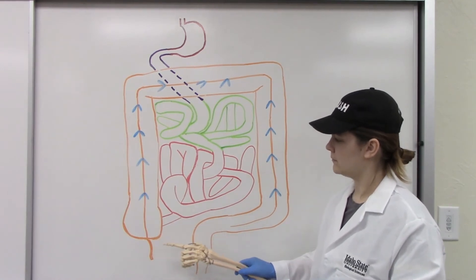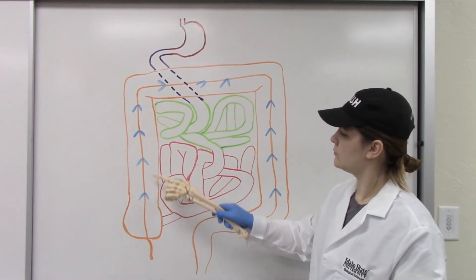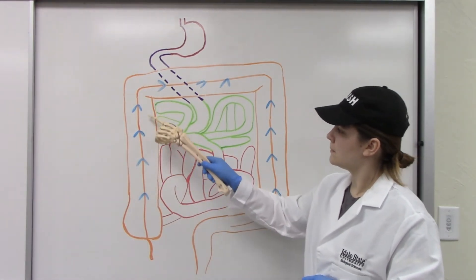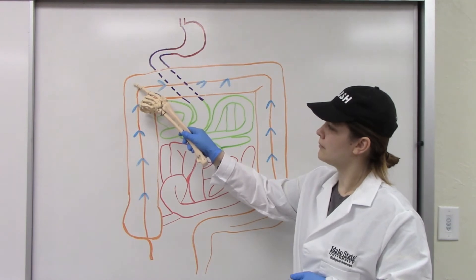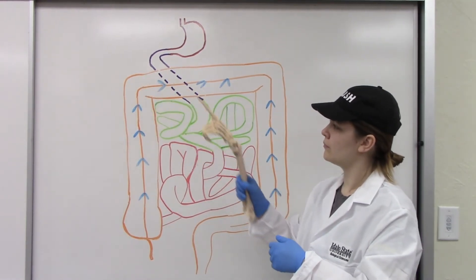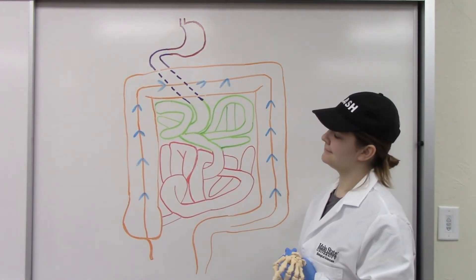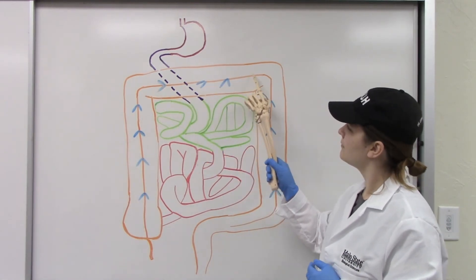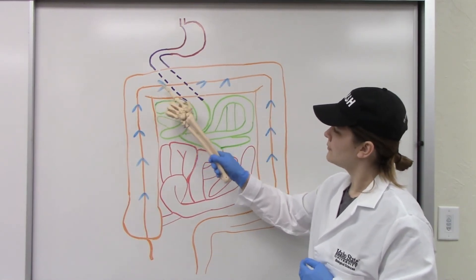The second portion of the box that travels from inferior to superior is the ascending colon. This corner of the box here is named for the liver, the hepatic flexure, or the right colic flexure. The next segment of the large intestine that travels from right to left across the body is the transverse colon.